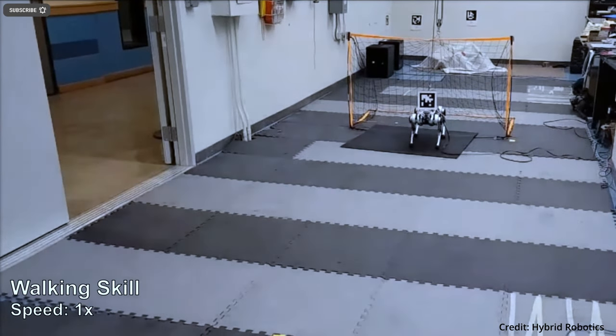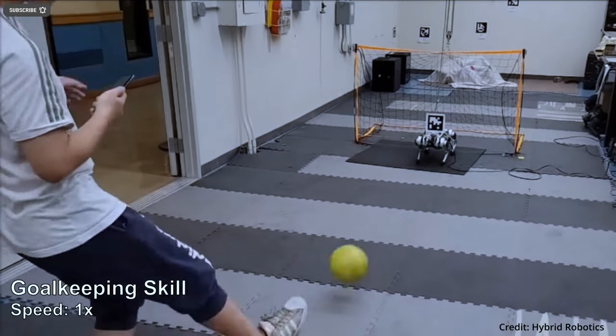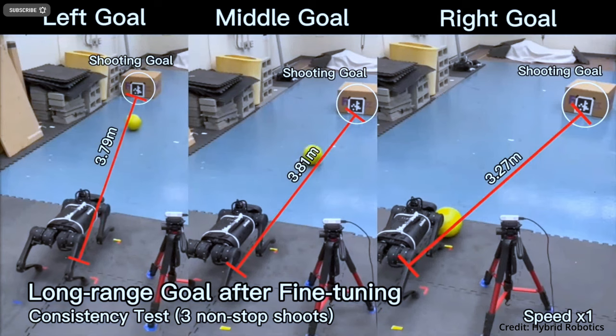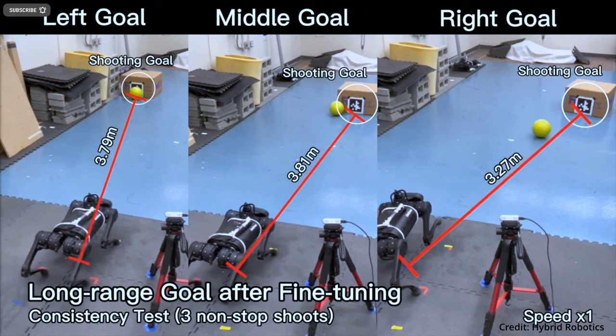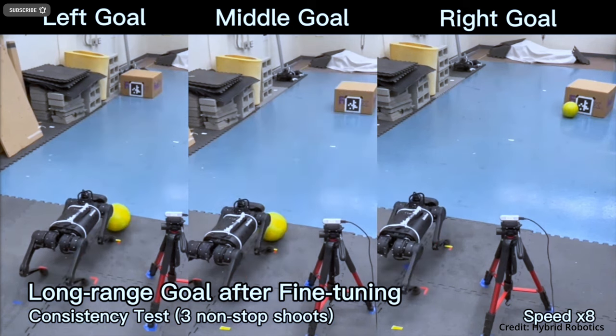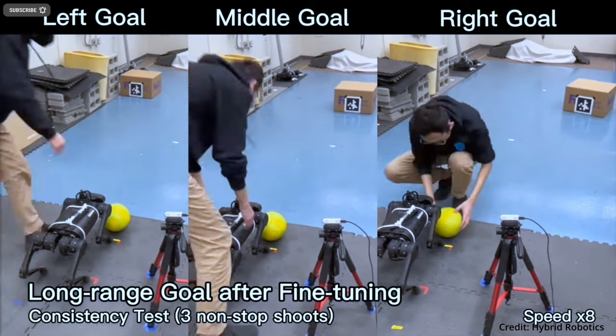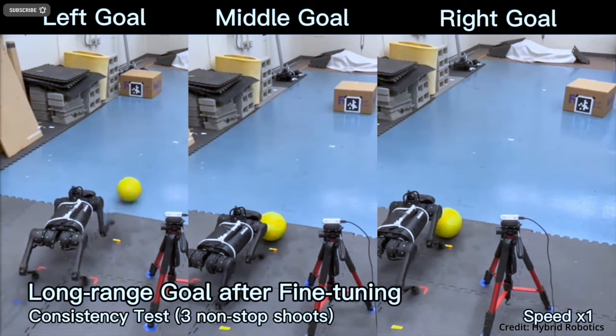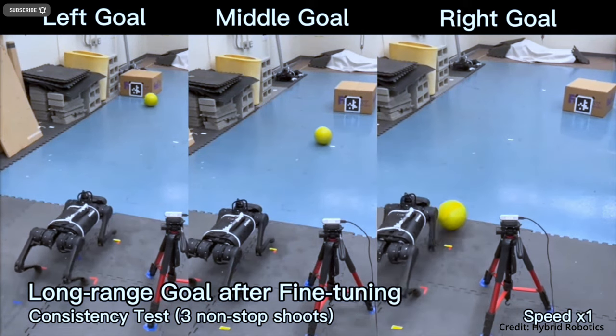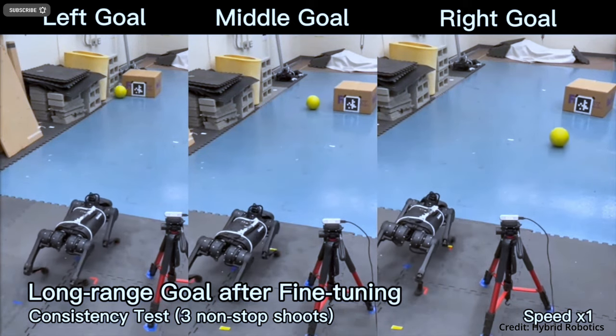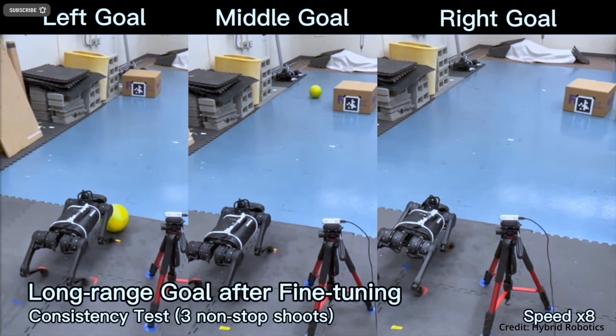The soccer goal that the robot was tasked to defend measured 5 feet by 3 inches and was situated approximately 14 feet from the ball. Mini Cheetah does not have a camera, therefore the ball's location is determined through an external camera and YOLO, which is a popular and lightweight computer vision algorithm that uses a convolutional neural network to perform real-time object detection.